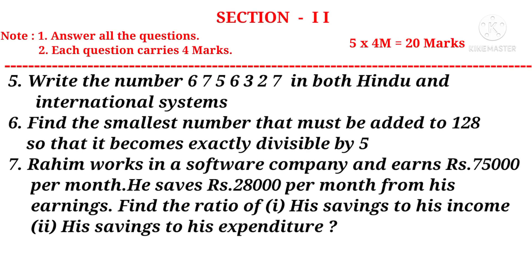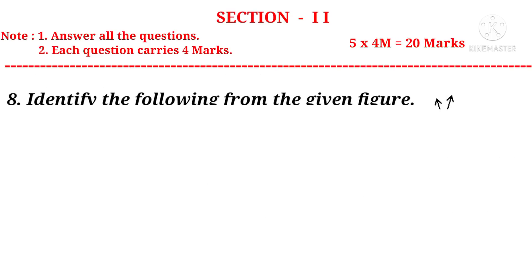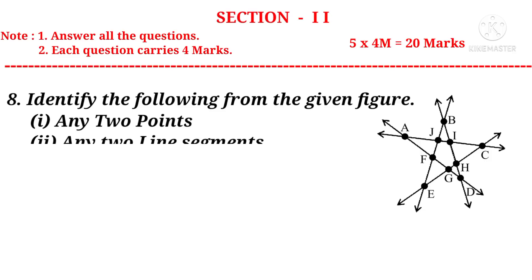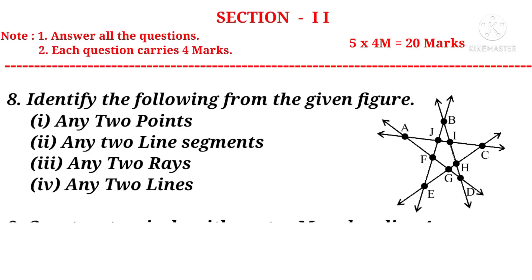Number seven: Rahim works in a software company and earns 75,000 rupees per month. He saves 28,000 rupees per month from his earnings. Now find the ratio of number one, his savings to his income. Number two, his savings to his expenditure. Now question number 8: Identify the following from the given figure. Number one, any two points. Number two, any two line segments. Number three, any two rays. Number four, any two lines. Number nine: construct a circle with center M and radius 4 centimeters.